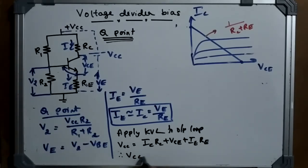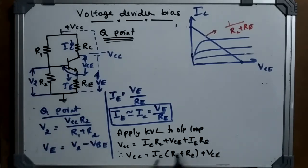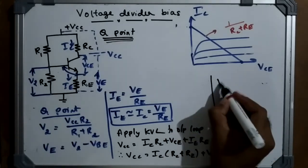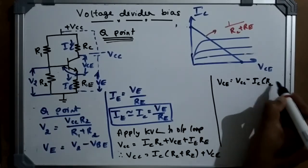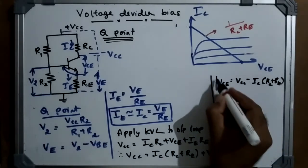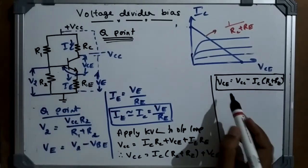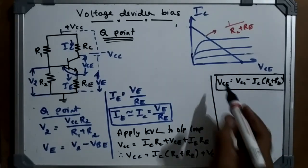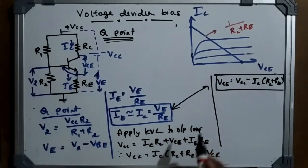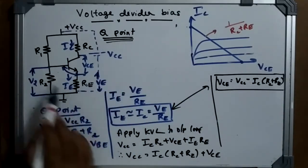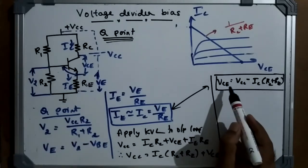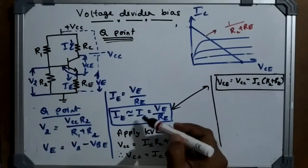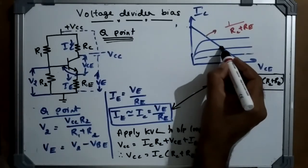From the KVL equation VCC = IC·(RC + RE) + VCE, we can solve for VCE: VCE = VCC − IC·(RC + RE). This is the expression for the collector-to-emitter voltage. For a given circuit, all values — R1, R2, VCC, RC, RE — are constant. Therefore there will be a specific value of VCE and its corresponding IC, which gives the operating point or Q point on the DC load line.